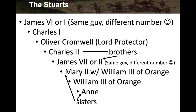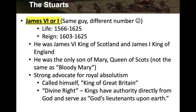James VI or I — same guy, different number — lived 1566 to 1625, and his reign was 1603 to 1625. The dates are not going to be on the exam; they're just to give familiarity with the timeline. He was James VI, king of Scotland, and James I, king of England. He was the only son of Mary, Queen of Scots — not the same as Bloody Mary, the Mary I of the Tudor period.